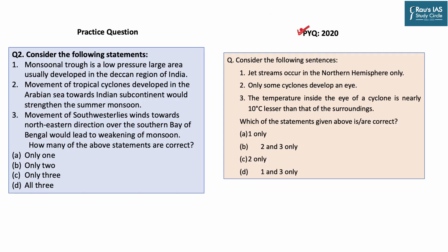In 2020, a similar weather or climate-based question was asked where cyclone, jet streams, and other concepts were asked. Today the question is based on three different understandings. The first one is: monsoonal trough is a low pressure, large area usually developed in the Deccan region of India.